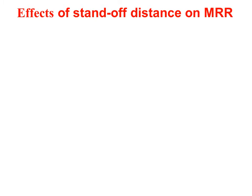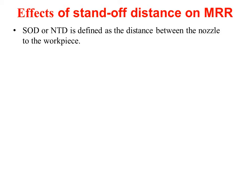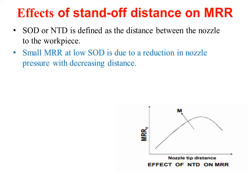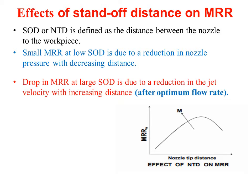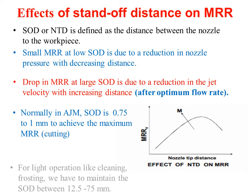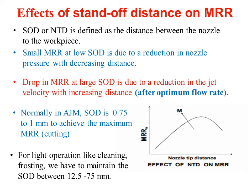The effect of standoff distance on MRR. The SOD or NDD is defined as the distance between the nozzle and the work piece. From this graph, it is noted that small MRR at low SOD is due to a reduction in nozzle pressure with decreasing distance. After the optimum, a drop in MRR at large SOD is due to a reduction in jet velocity with increasing distance. Normally in AJM, SOD is 0.75 to 1 mm to achieve maximum MRR. For light operations like cleaning and frosting, SOD should be maintained between 12.5 to 75 mm.